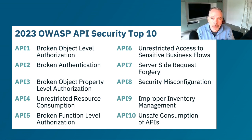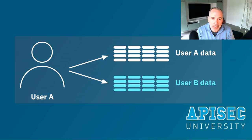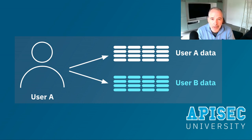The issue with BOLA is it's an authorization flaw, not an authentication flaw. This type of vulnerability is really about whether user A can authenticate to your API and then manipulate the object IDs to access data belonging to another user. It doesn't have to be users per se — it could be objects — but the idea is that an individual authorized to a certain set of information should not be able to access similar objects and transactions of another user.